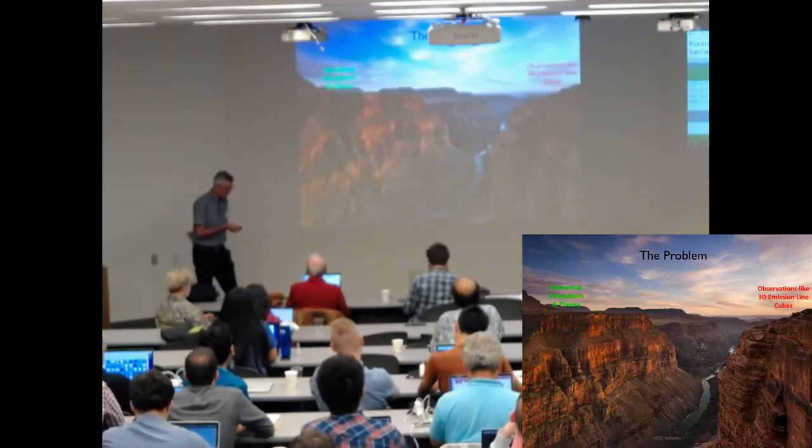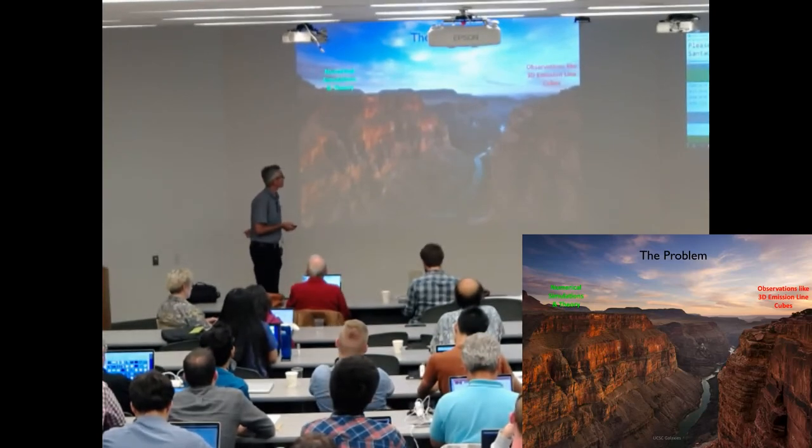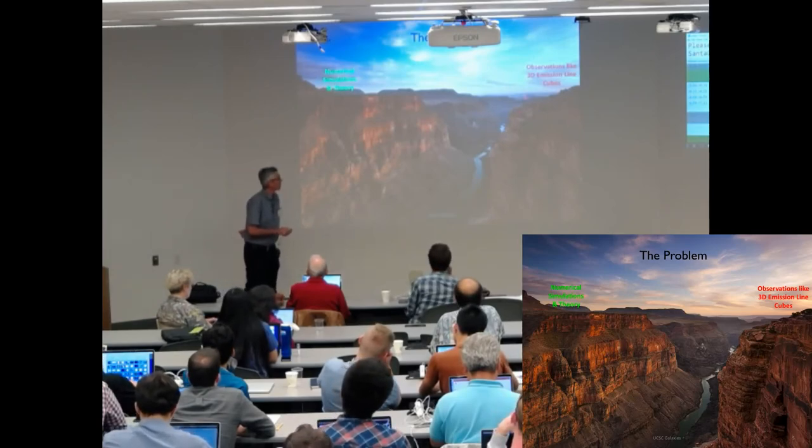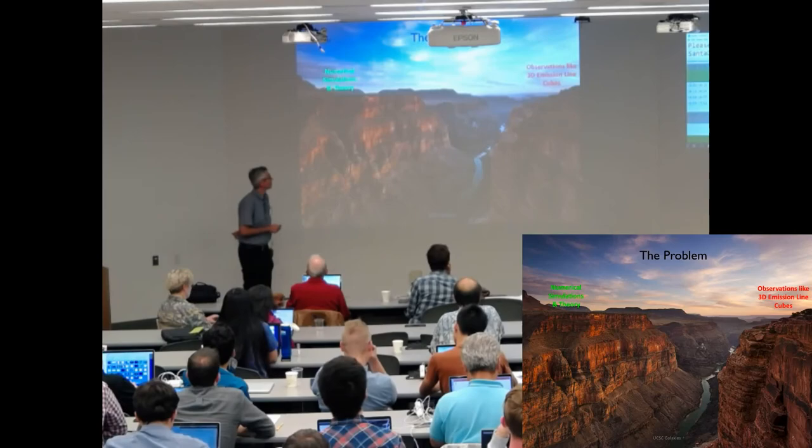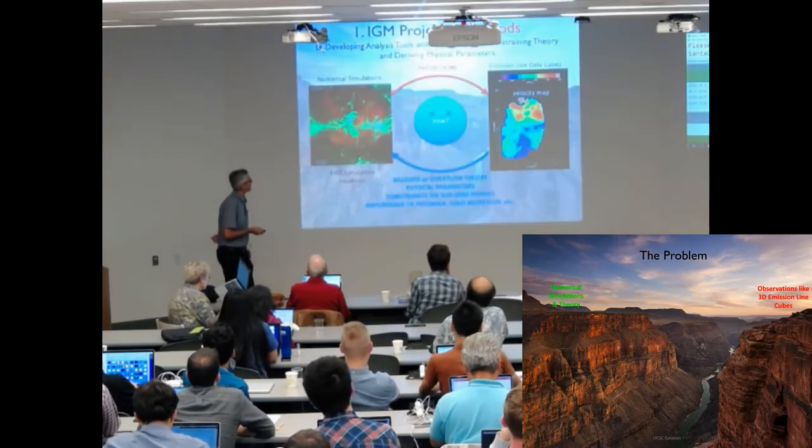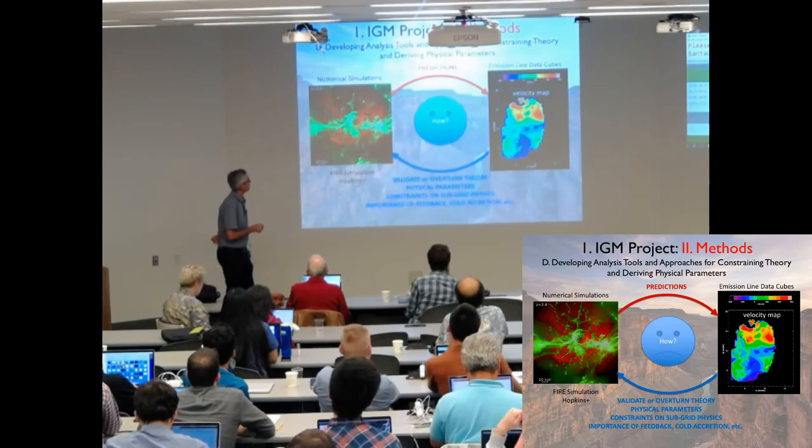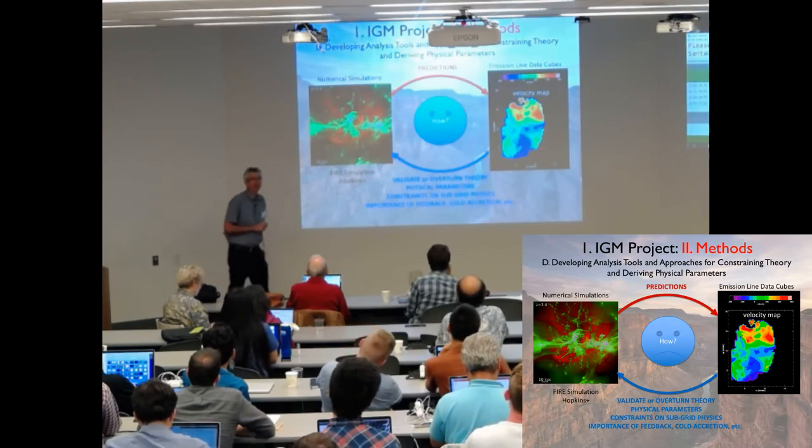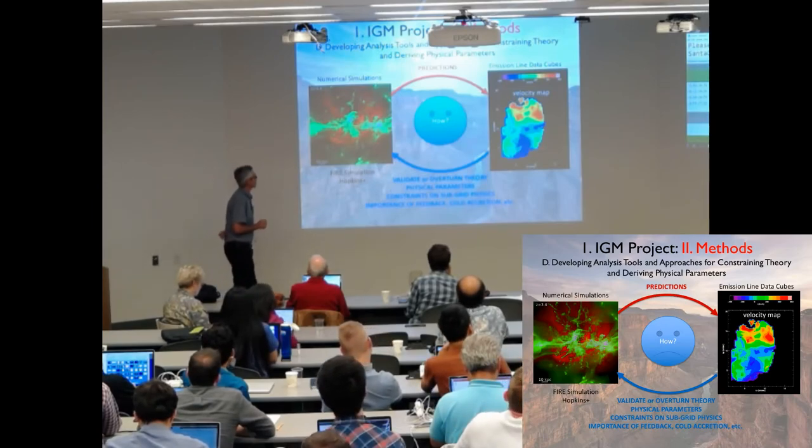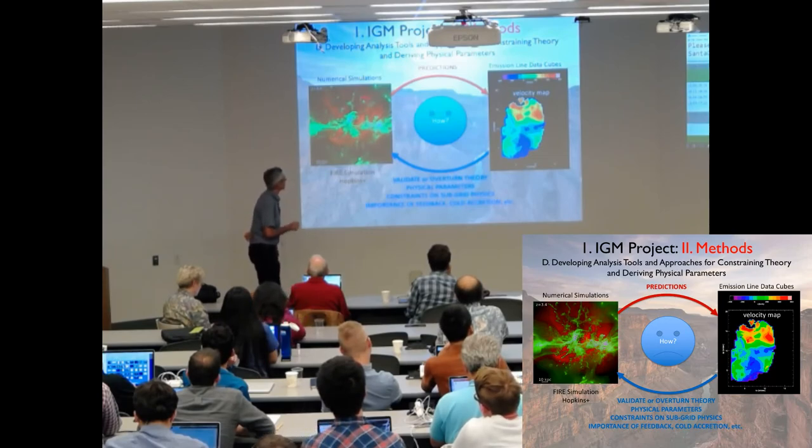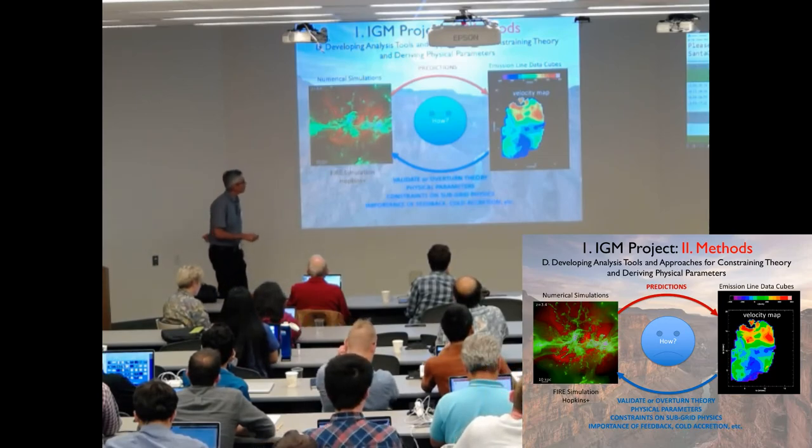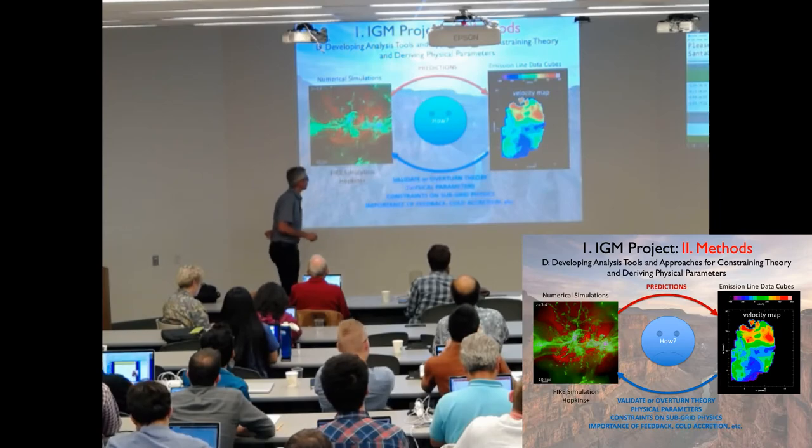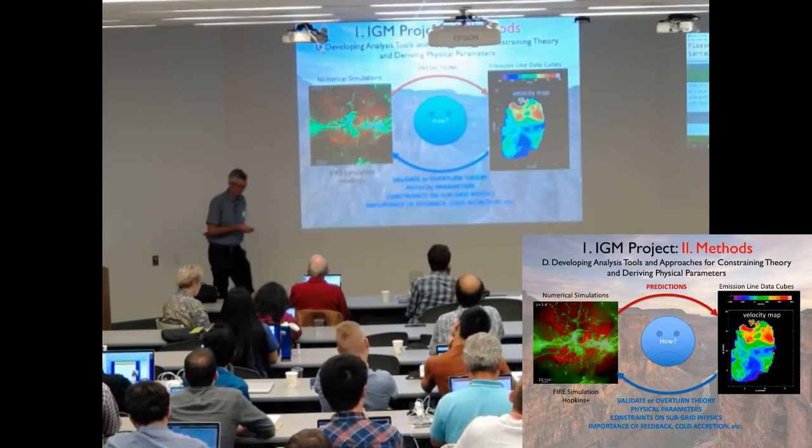But I think one of the issues that I think is starting to be addressed at this conference is trying to relate simulations with observations like 3D emission-line cubes. I think there's a gap, and we want to use simulations like the FIRE simulation to try to relate that. This is a challenge if you think about it, and you can make predictions that will be able to select regions and objects, and then you want to use the prediction, presumably, to validate or overturn the theories that these predictions are based on, determine physical parameters, and so on.